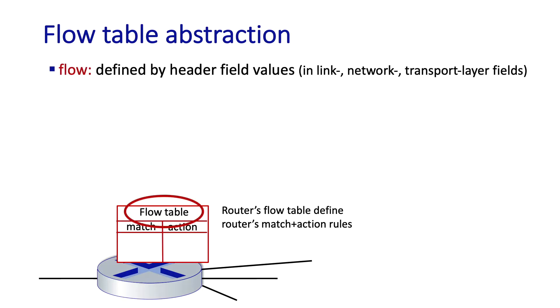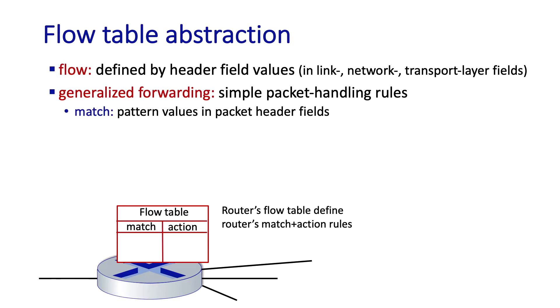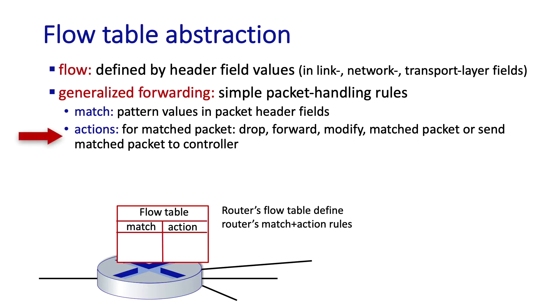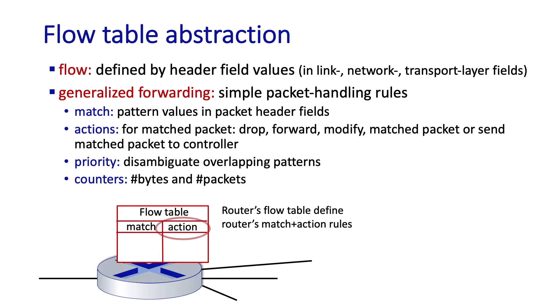In the case of generalized forwarding, the forwarding table is sometimes referred to as a flow table. The action that a router can take when a match is found could be to forward the packet to a given output port, to block or drop the packet (that's what a firewall does), to modify the packet or rewrite the header (that's what NAT does), or maybe to send the packet to the SDN controller. There can also be priorities associated with each flow rule and counters for the numbers of packets matching the flow values. We see this router's flow table here with a match column and an associated action column.